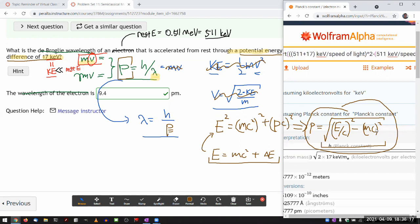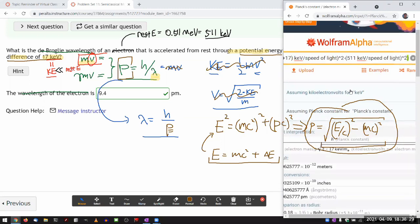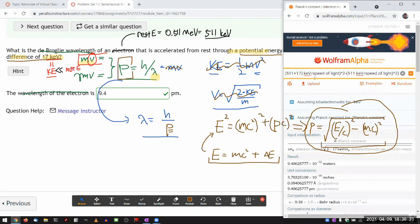Because mc is mc squared divided by c, square it, okay, I think I put in all the expression for here.